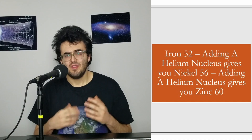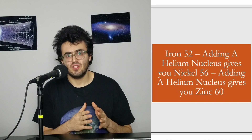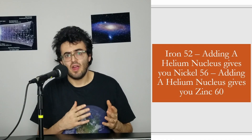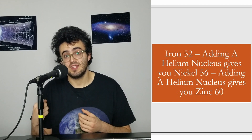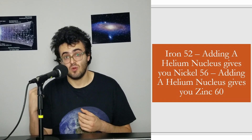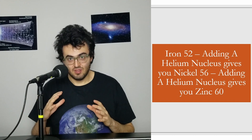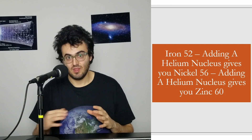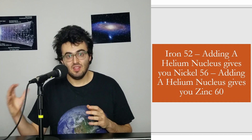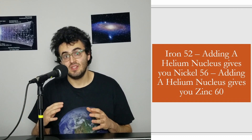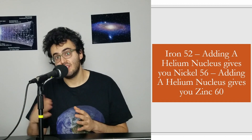There are definitely elements heavier than iron that are fused in stars. The iron fused in a star is iron-52 — iron with 52 nucleons and 26 protons, meaning this isotope has 26 neutrons. A helium nucleus fuses with iron-52 to give nickel-56, and then another helium nucleus fuses with that nickel-56 to give zinc-60.